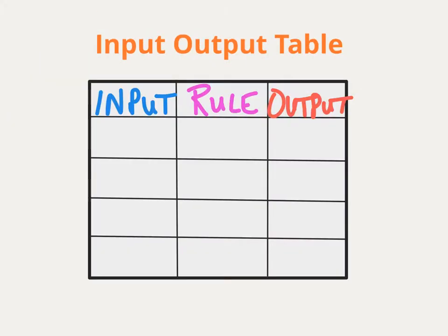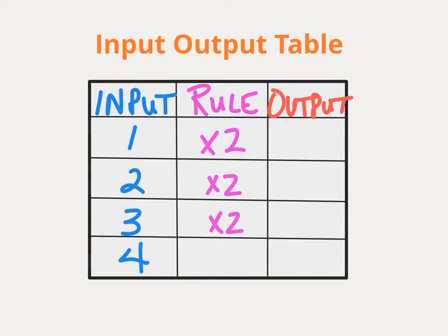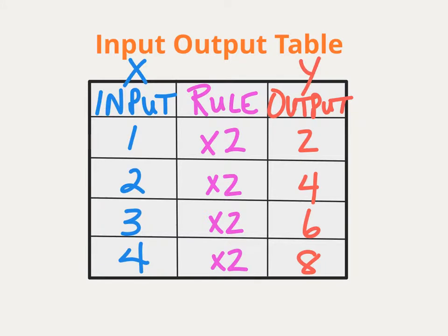In fourth grade, you learned about input-output tables. You understood that if there was data in the table and you applied a rule to that data, you could generate output data. Well, in sixth grade, we're going to teach you that input-output tables are one way to show rates and ratios and their relationship — we'll talk about X and Y values, as well as equations. We're going to take what you already know about input-output tables and just take you a little bit further.